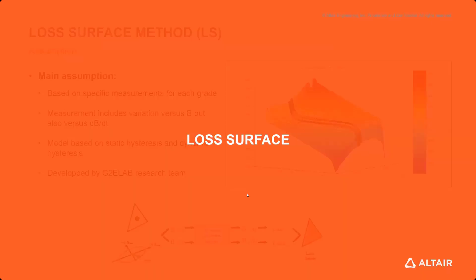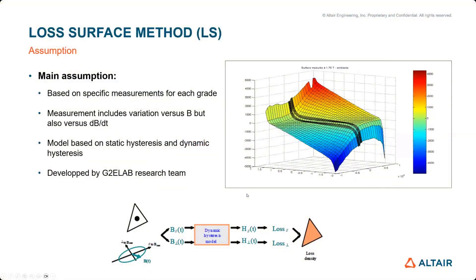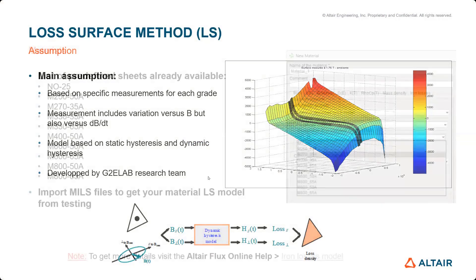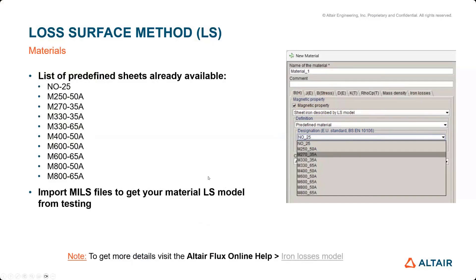Comparing to the loss surface method: this LS method is unique to Flux and was developed by the G2E lab. The difference is that it's based on measurements that include variation versus B, like the other method, but also measurements versus dB/dt for the whole hysteresis cycles. Based on this extra measurement, we're able to take into account more detailed losses — for example, rotational losses inside the iron. For this model, we have a list of predefined sheets already available in Flux. If you don't have many measurements, you can use a similar lamination; otherwise, we need to do some identification.